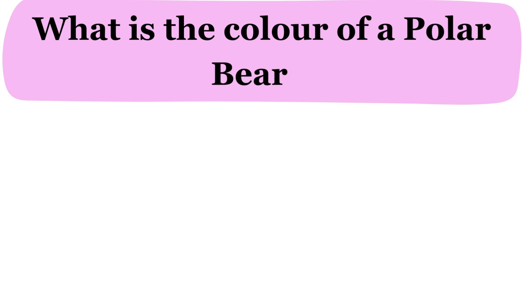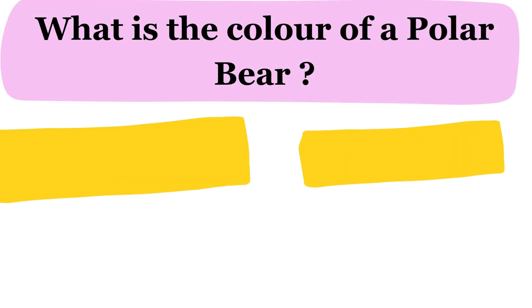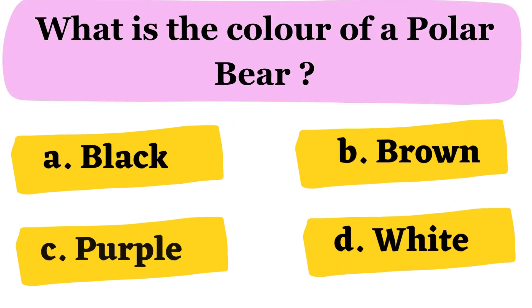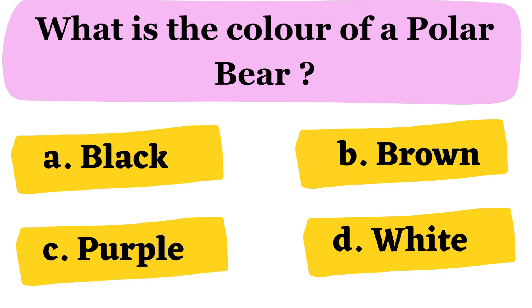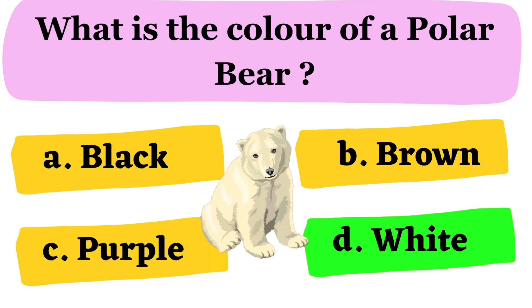What is the color of a polar bear? A. Black B. Brown C. Purple D. White. The correct answer is option D. White.